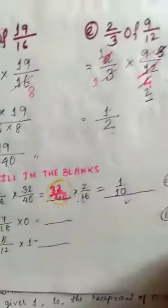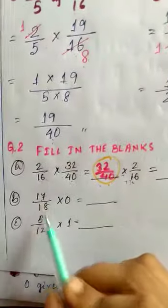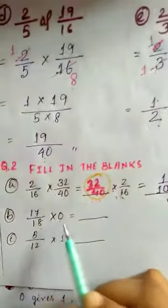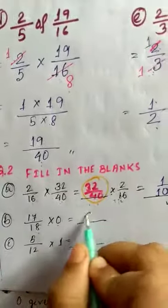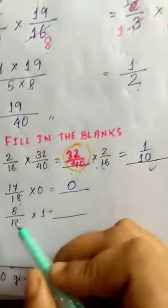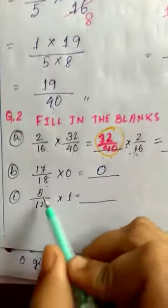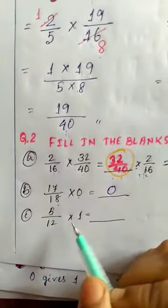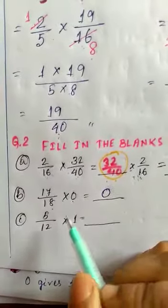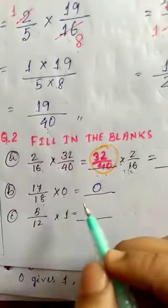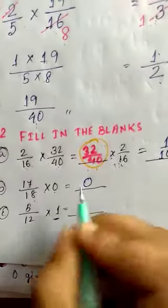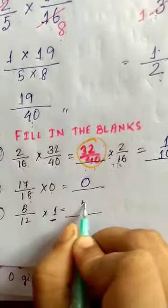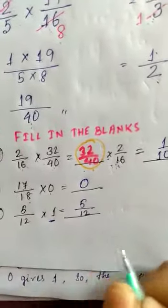Next: 17/18 × 0 = 0, by property 1 — any fraction multiplied by 0 gives 0. Then: 5/12 × 1 = 5/12, by property 2 — any fraction multiplied by 1 gives the same fraction.